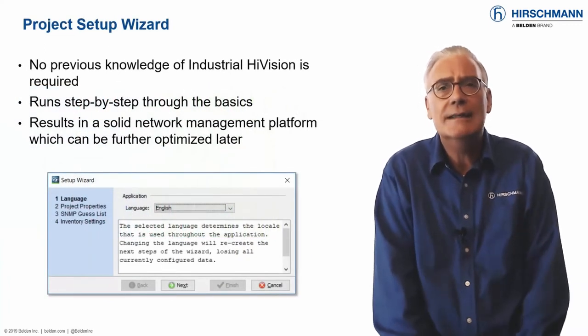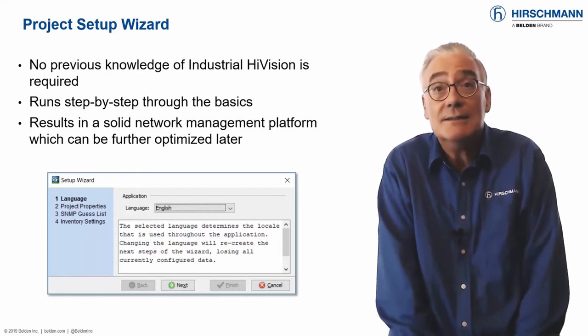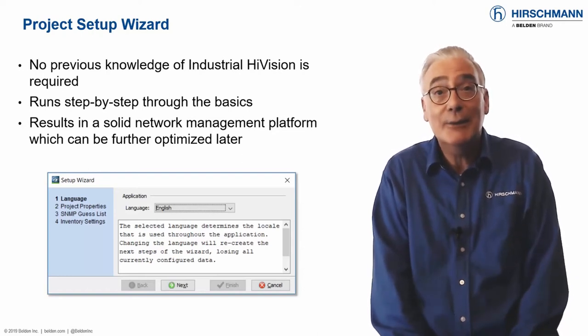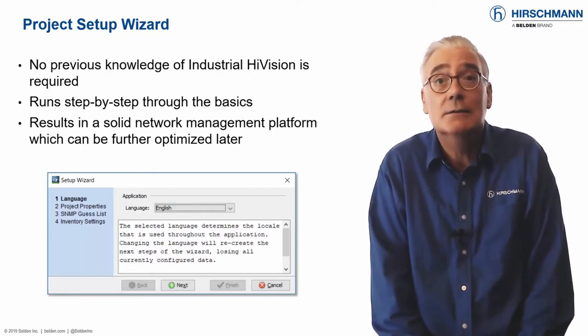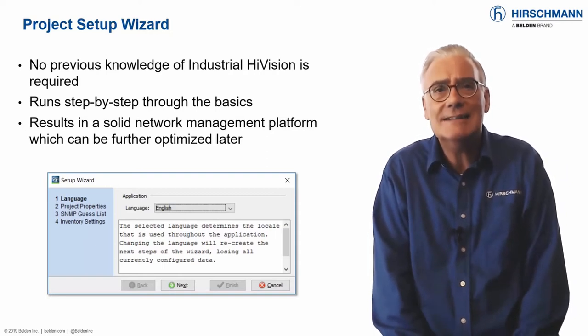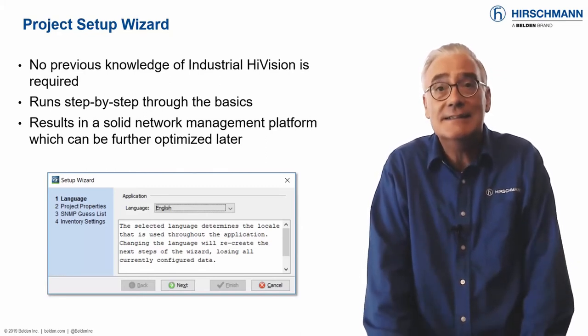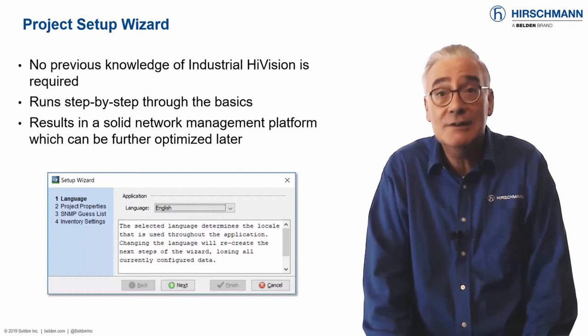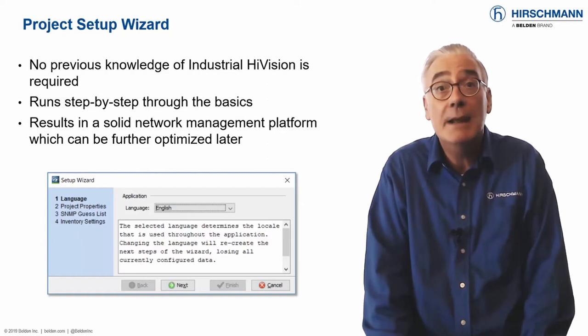Although Industrial HiVision is a powerful network management application, getting started does not require a lot of expert knowledge. But sometimes it's good to have a helping hand. Maybe you've never used a network management application before, or you just want to get started quickly without learning where to find all the options. In either case, the setup wizard is right for you. It will take you step by step through the setup process, resulting in a very usable management application in the minimum possible time.